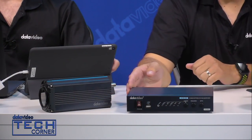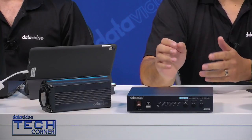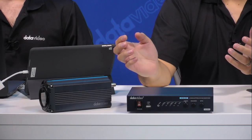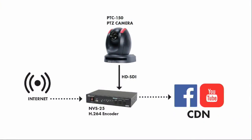We're going to do a tutorial on streaming from start to finish with our NBS-25 encoder, which is right here. We'll show a graphic overview of our test stream setup: an example of our PTC-150 camera, which is a pan-tilt-zoom camera that we would connect to the encoder. It's just an example.